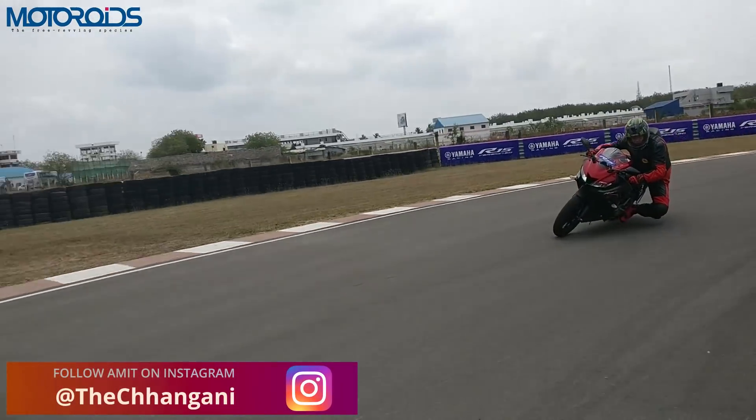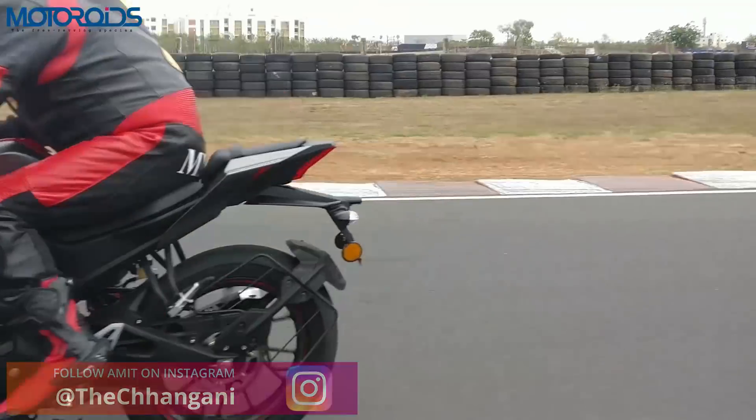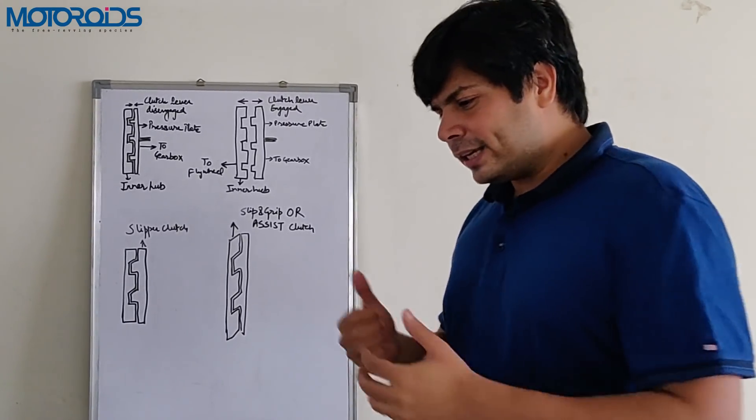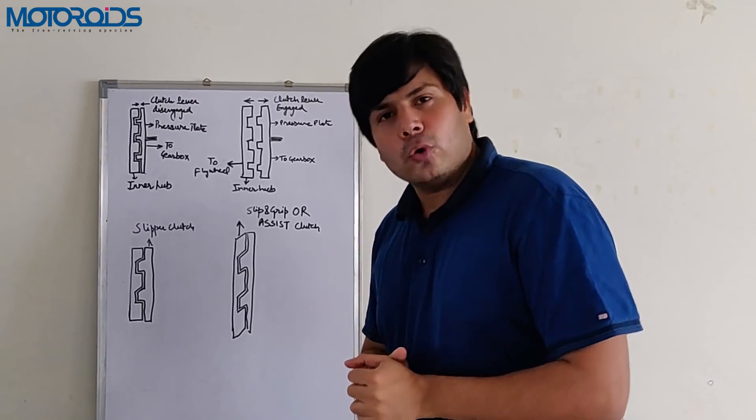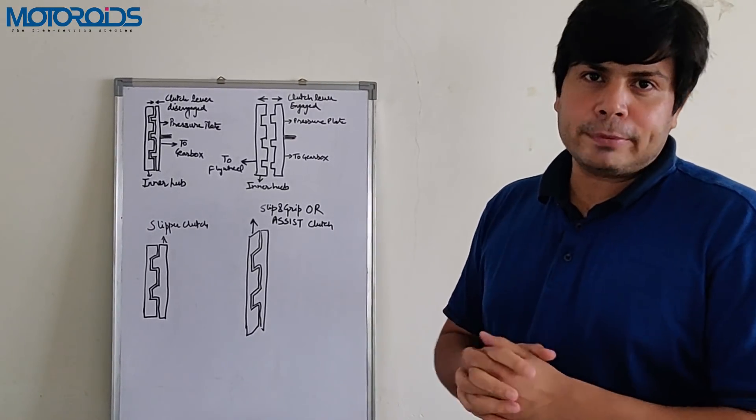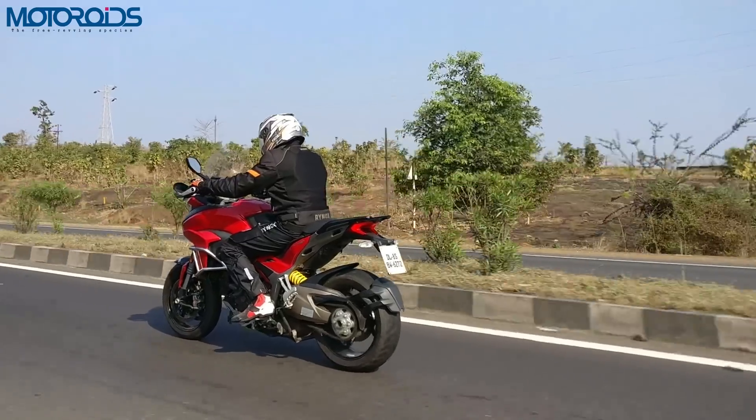With a slipper clutch you will not require to rev match or match the speed of the wheels to the engine speed and that's something that you can forget about. There is a case against this especially by old school riders who think that rev matching is a very useful concept and that's a skill that all the riders should practice. However, we'll talk about rev matching or blipping the throttle in another video.